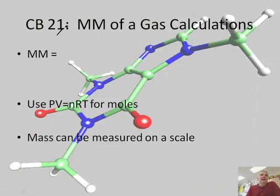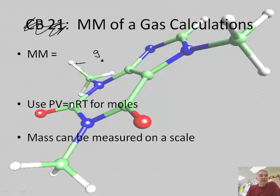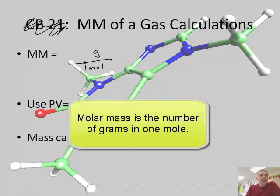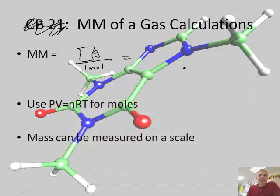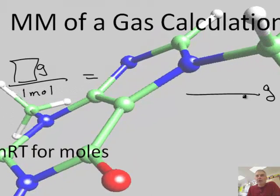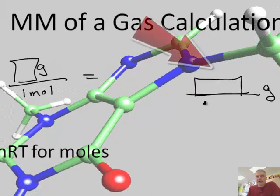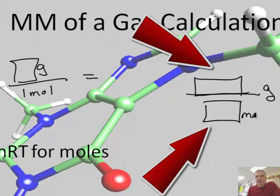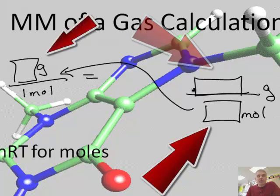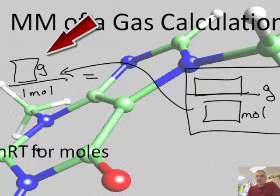So molar mass of gas calculations. First of all, we just need to understand what is the units on molar mass. If you recall, molar mass is the number of grams in one mole. And this varies. We usually look on the periodic table to determine what this value is. But basically, this kind of gives us an equation. If you know the number of grams, some number, and you divide by some number of moles, that will give you the grams in one mole. And so this essentially is the equation.